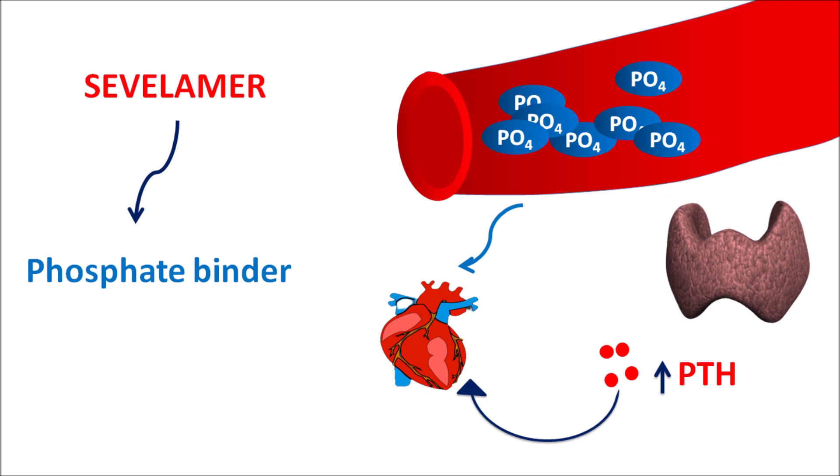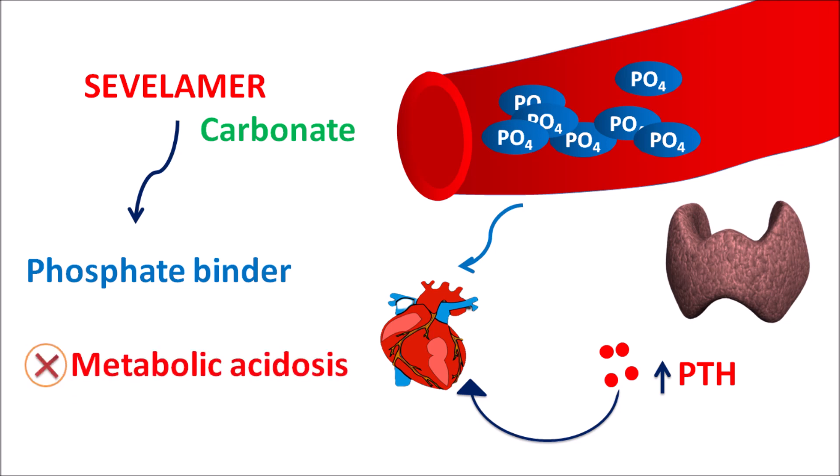Sevelamer is a resin available in two salt forms: sevelamer chloride and sevelamer carbonate. Sevelamer chloride can produce metabolic acidosis by increasing chloride levels within the serum, but the carbonate form does not produce metabolic acidosis.